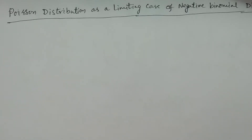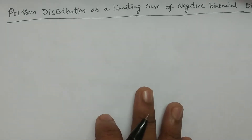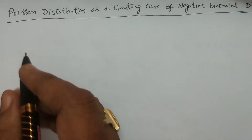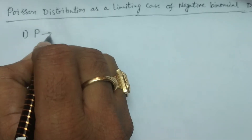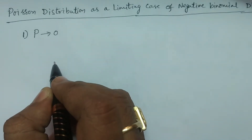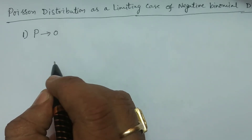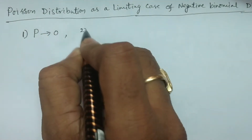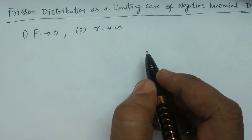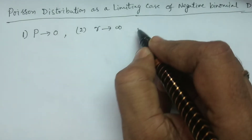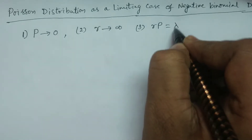Now I consider the conditions under which negative binomial distribution tends to Poisson distribution. Condition number 1: capital P tends to 0. Condition number 2: R tends to infinity. And the third condition: RP is equal to lambda.